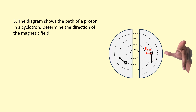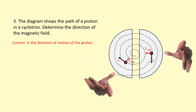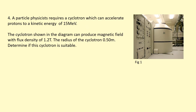Let's try again at a different point. The proton is going in this direction — that's the direction of current. The force is towards the center of the circle. Applying Fleming's left hand rule again: thumb towards center, current in the direction of the proton — the field is again pointing out of the page. So the magnetic field is pointing out of the page, coming towards us.